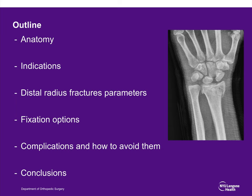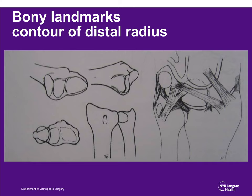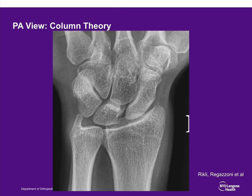The bony landmarks of the distal radius are well known. There is a scaphoid fossa and a lunate fossa, a distal radioulnar joint, and a sigmoid notch for the ulna to articulate with the radius. On a PA view, one can think of three columns: a radial column, a middle column, and an ulnar column.